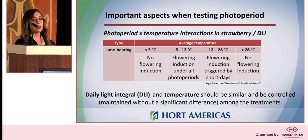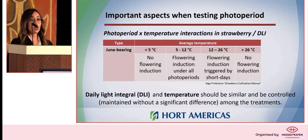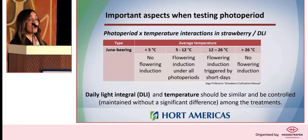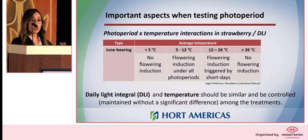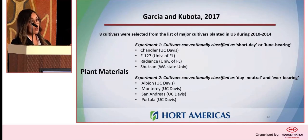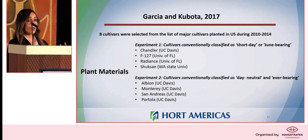Plants can have an interaction with temperature when we are testing photoperiod. It's really important that when you are testing photoperiod, you should maintain the same temperature between all the different treatments — if you are testing different cultivars under different treatments to get the specific response to photoperiod. And if you are a grower following a published recipe, you also need to pay attention to the temperature that was used. For the experiment I will present, we tested different cultivars from the United States and North America: short-day cultivars and, according to classification, day-neutral cultivars.